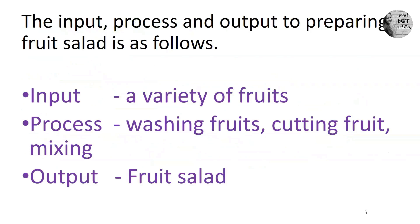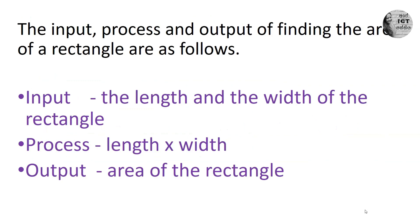Can you see the input, process, and output to prepare a fruit salad? What are the inputs to prepare a fruit salad? Here we mention a variety of fruits. Besides the fruits, other things we need: sugar, we can add salt, plums if needed, and we can add some ice cream. The process mentions very simple steps: washing fruits, cutting fruits, and mixing them. Then the output is a fruit salad.